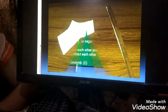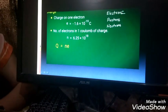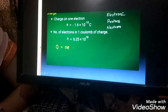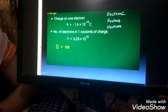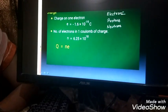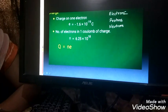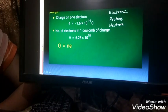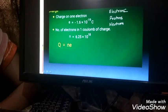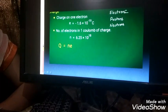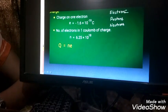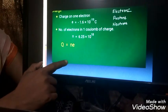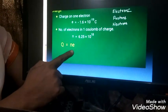Now the charge on one electron is equal to minus 1.6 into 10 to the power minus 19 Coulomb. And number of electrons in one Coulomb of charge is equal to 6.25 into 10 to the power 18. Q is equal to N into E.